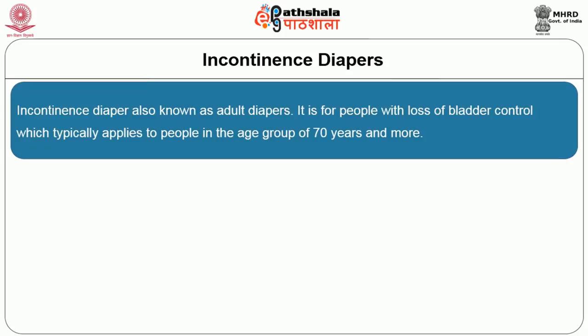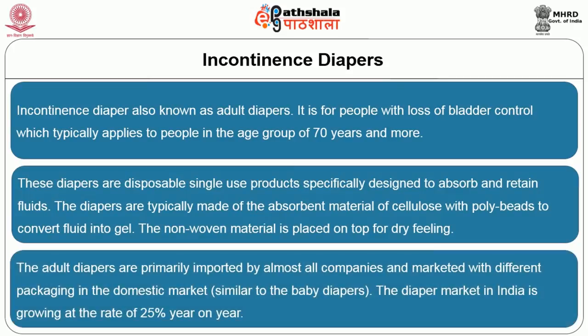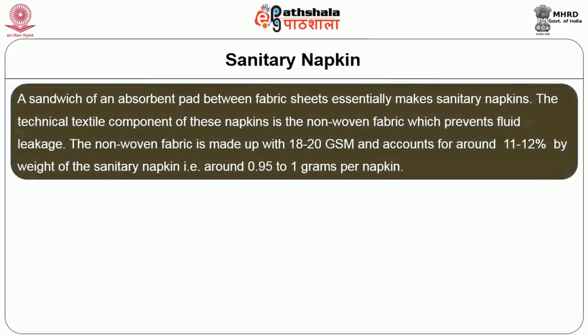Incontinence diapers are used by adults aged 70 and above. These diapers are disposable, single-use products specifically designed to absorb and retain liquid. The diaper is typically made of absorbent materials of cellulose with polymer beads to convert liquid into gels, and non-woven material is placed on top for a dry feel. Adult diapers are primarily imported by almost all companies and marketed with different packages in the domestic market. The diaper market in India is growing at a rate of 25% every year.